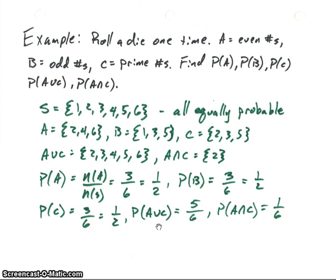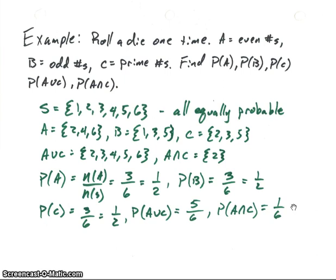For A union C, we found that there are five elements — {2, 3, 4, 5, 6} — so its probability is 5/6. And finally, there is only one element in A intersect C, so its probability is 1/6.